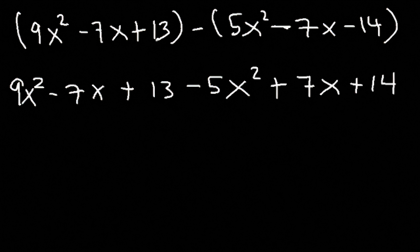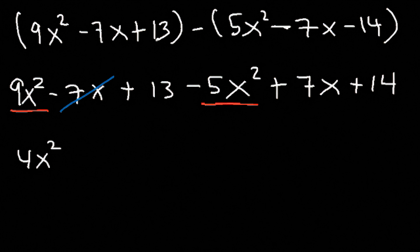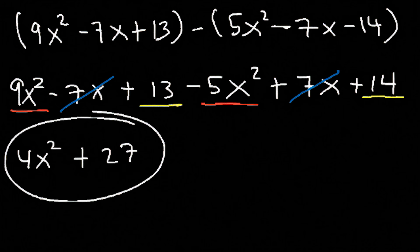Now let's combine like terms. 9 minus 5 is 4, so it's 4x squared. Negative 7x plus 7x is 0, so they cancel. And 13 plus 14 is 27. So this is the answer: 4x squared plus 27.